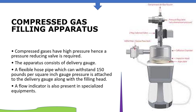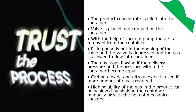Compressed gas filling apparatus: compressed gases have high pressure, hence a pressure-reducing valve is required. The apparatus consists of a delivery gauge and a flexible hose pipe capable of withstanding 150 psi gauge pressure, attached to a filling head. A flow indicator is also present in specialized equipment. The product concentrate is filled into the container, the valve is placed and crimped, air is removed by vacuum pump, the filling head is put in the opening of the valve, and gas is allowed to flow. The gas stops flowing when delivery pressure equals container pressure. Carbon dioxide and nitrous oxide are used if more gas is needed. High solubility of gas in the product can be achieved by shaking manually or with mechanical shakers.